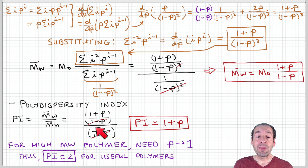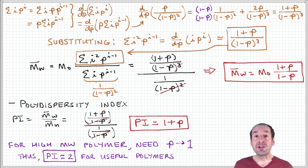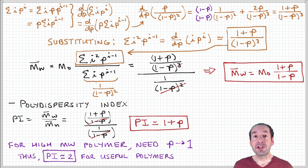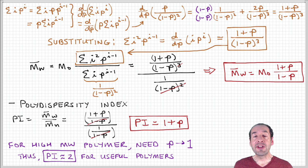For useful polymers, p is approximately equal to 1. Therefore, for polymers produced using step growth polymerization, the polydispersity index is going to be approximately equal to 2. This shows how the progress of the reaction, based on interactions between functional groups among monomers and growing polymer chains, produces a distribution of chain lengths associated with a polydispersity index around 2.